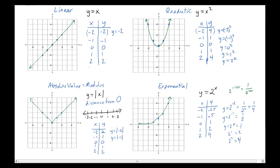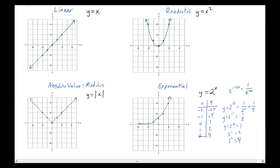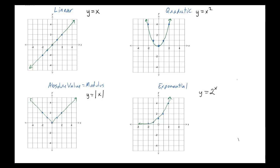In the last video we derived these four equations. What I want to do is talk about each of these graphs and identify some important features. The first thing we'll mention is the name: this is linear. The general equation for the parent function is y equals x, and the shape of course is just a straight line.